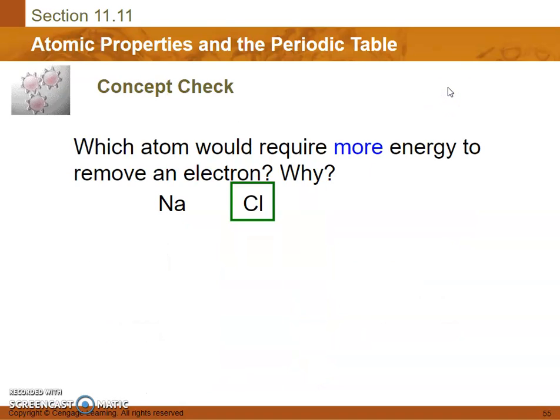Which atom would require more energy to remove an electron, and why? Sodium or chlorine? Well, it is chlorine because it is further to the right and requires more energy to remove an electron.